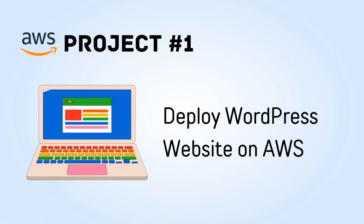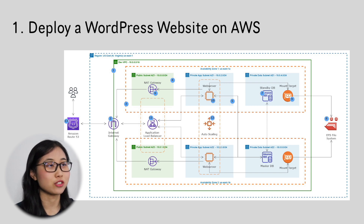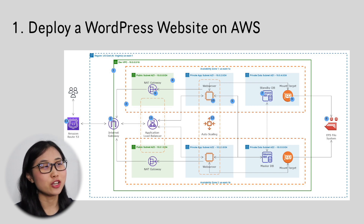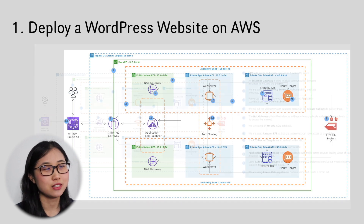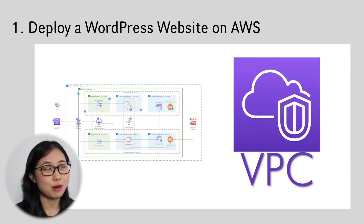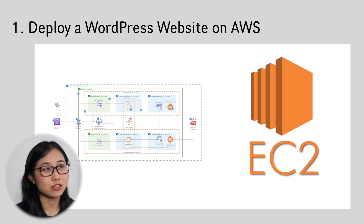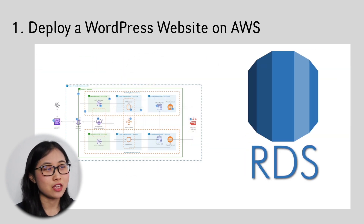The first project is to deploy a WordPress application on AWS. This is probably the best beginner-friendly project to put onto your resume because it not only uses a lot of AWS core services, but it's also a pretty common architectural pattern that many AWS customers adopt. You can see here that the solution involves a VPC with public and private subnets, along with services like Amazon EC2, RDS, EFS, and a few other components.